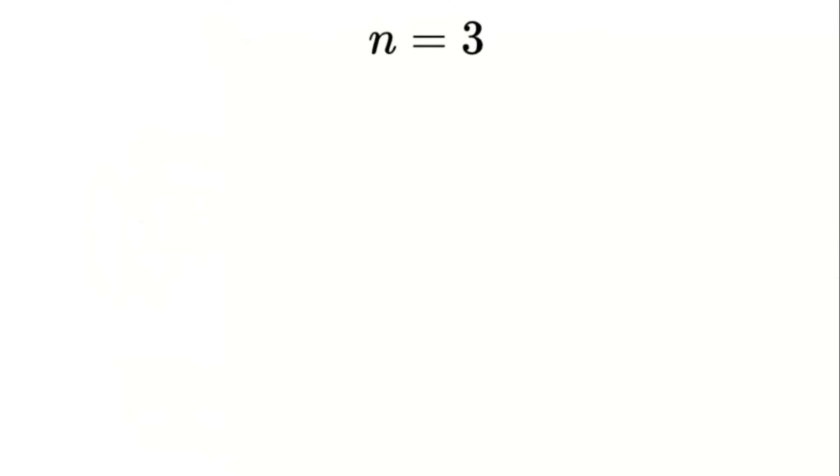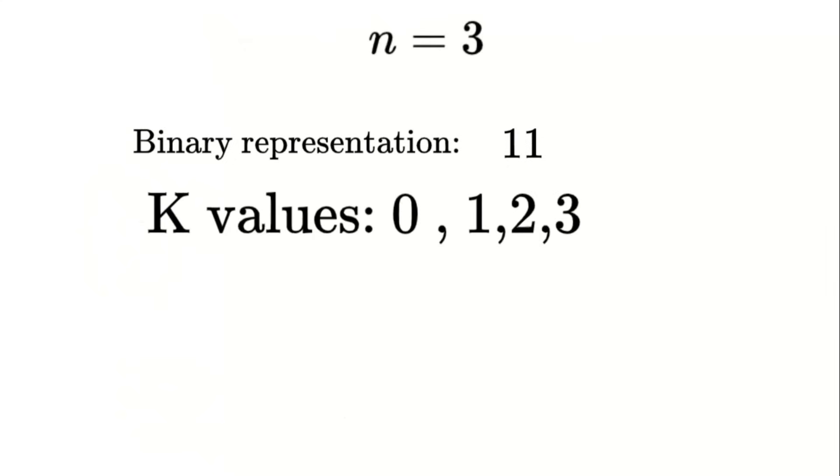Example 2 when n equals 3 the binary representation of 3 is 1 1. The valid k values are 0, 1, 2, and 3. So we write 1 plus j cubed equals V of 0 plus V of 1 plus V of 2 plus V of 3.